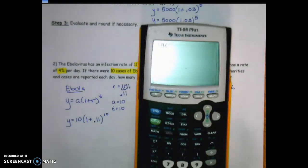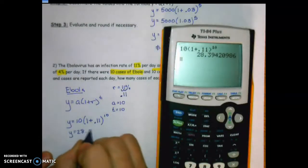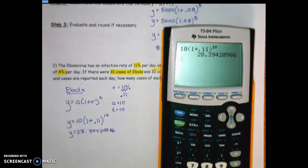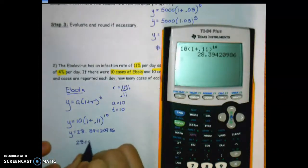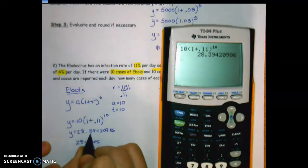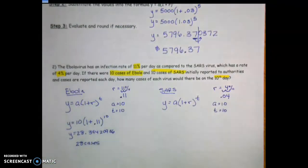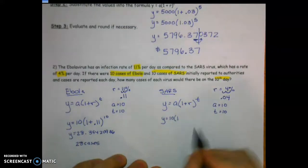Plugging into the calculator: 10 × (1 + 0.11)^10 gives y = 28.394209... Since we're reporting number of cases, round to the nearest whole number. The digit after the decimal is three — four or less — so we round down to 28 cases of Ebola after 10 days.